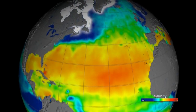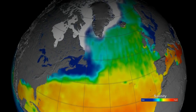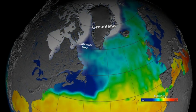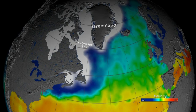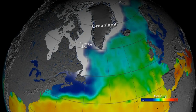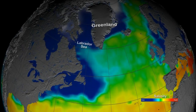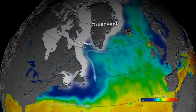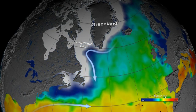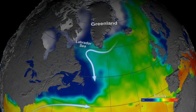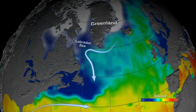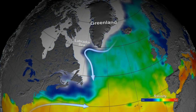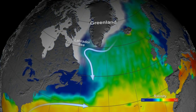At high latitudes, the seasonal melting of sea ice causes a sharp decrease in sea surface salinity. We see examples of this in the Labrador Sea and the coastal waters that surround Greenland. In spring and summer, surface currents transport the low salinity water south, where it meets warmer and saltier water carried north by the Gulf Stream.